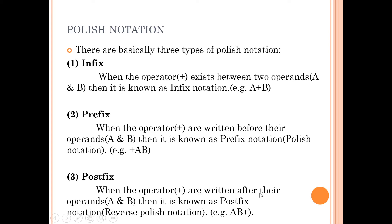When multiplications or operators are written after their operands — operands means variable ke baad — for example a, b ke baad agar operator likhte hain, like a b plus, toh iska meaning same hota hai jaise a plus b. In means bich mein, pre means before, and post means after. So there are three types of polish notation.